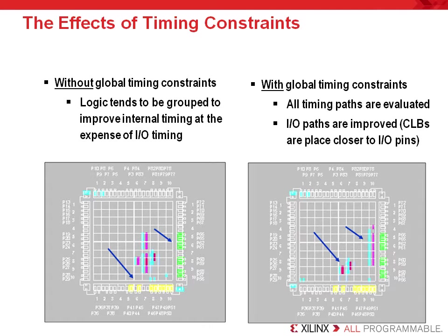On the right-hand side of this slide, you see the same design implemented with global timing constraints. This required the use of input, output, and internal timing constraints — that is, offset in, offset out, and a period — which forced the implementation tools to move logic closer to the I/O pins to improve on- and off-chip timing. Note that the logic is placed closer to the I/O pins due to these timing constraints. Timing constraints are used to communicate your performance objectives to the software, which is used to place and route the design such that it meets your objectives.